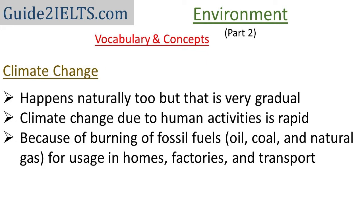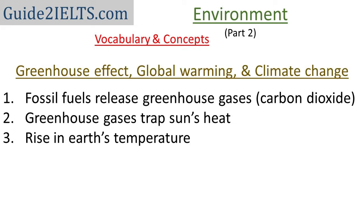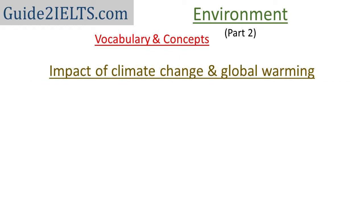Climate change is actually a natural phenomenon, but it is very gradual when it happens naturally. The rapid climate change we are seeing now is caused by humans using oil, gas, and coal for their homes, factories, and transport. When fossil fuels burn, they release greenhouse gases — mostly carbon dioxide. These gases trap the sun's heat and cause the planet's temperature to rise. Now we'll list out the impact of climate change and global warming.